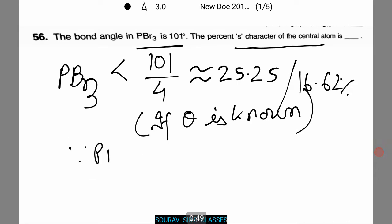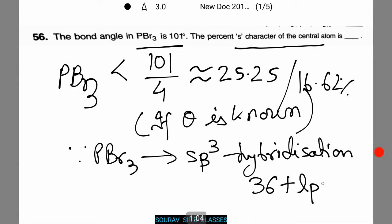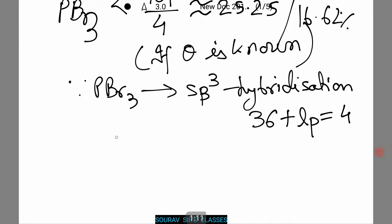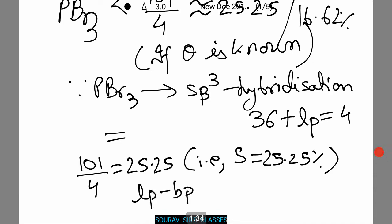Since PB3 shows SP3 type of hybridization, due to 3 sigma bonds plus 1 lone pair which equals 4. Now if all bonds are of equal bond angle, then 101 by 4 equals 25.25 approximately — that is, s-character equals 25.25%. But due to LP-BP type of repulsion, the bond angle must be less than 25.25%.